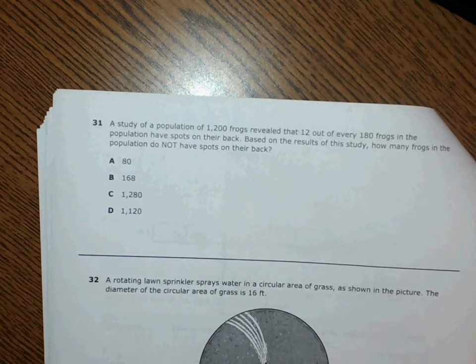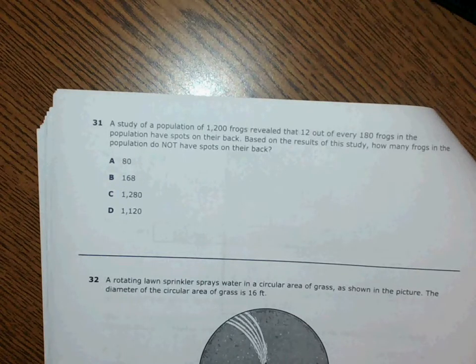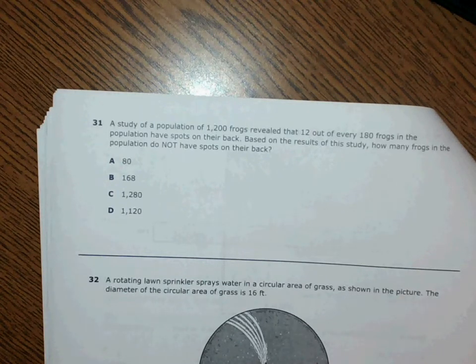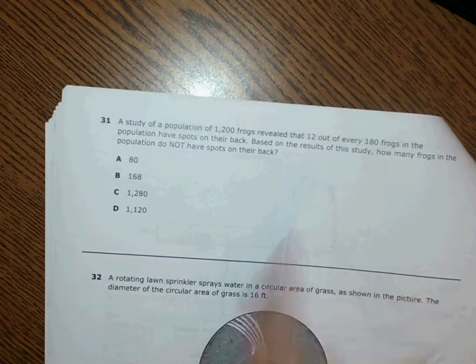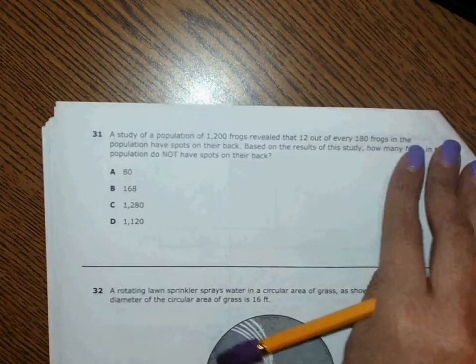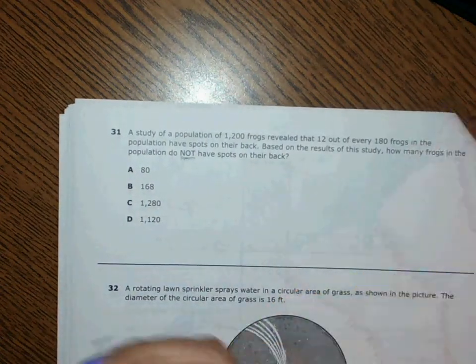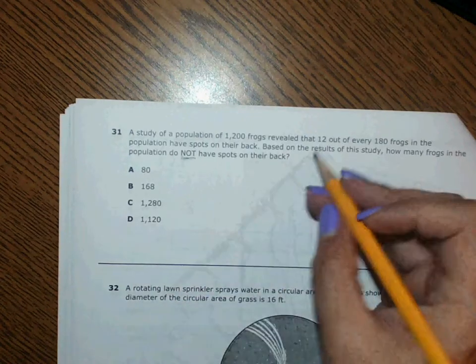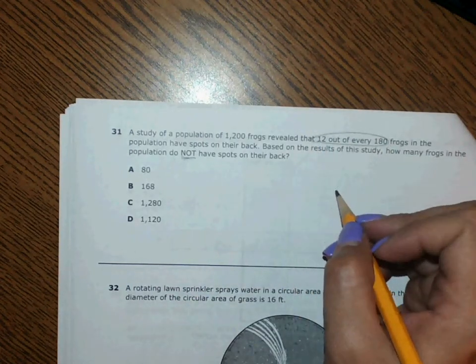Okay, number question 31 says: A study of the population of 1,200 frogs revealed that 12 out of every 180 frogs in the population have spots on their back. Based on the results, how many frogs in the population do not have spots on their back? Okay, so if 12 out of every 180 have spots...